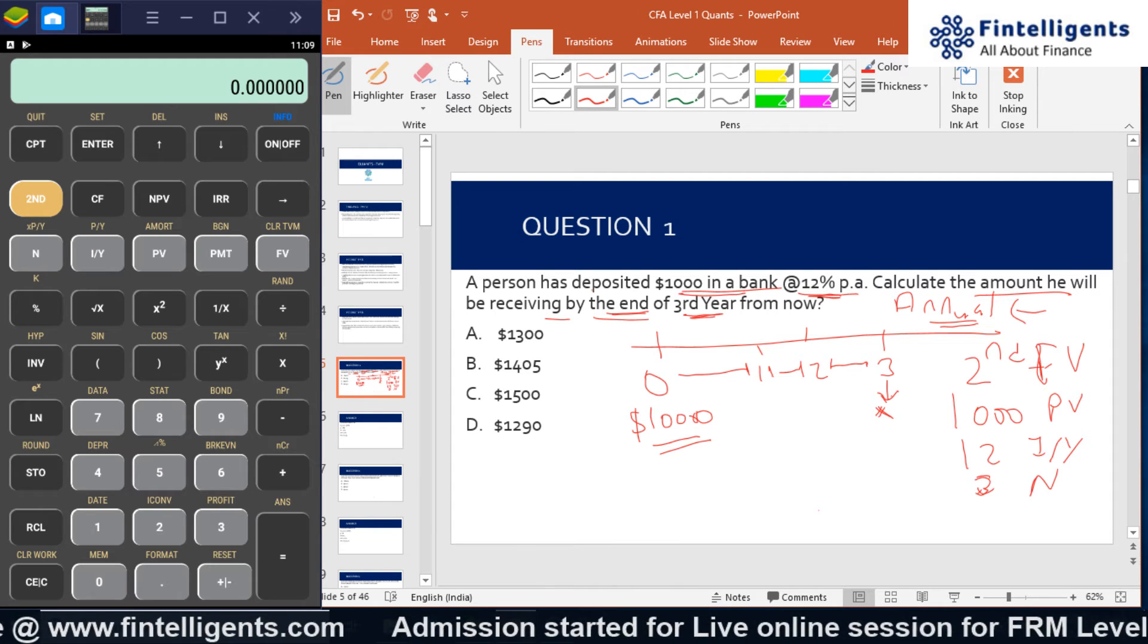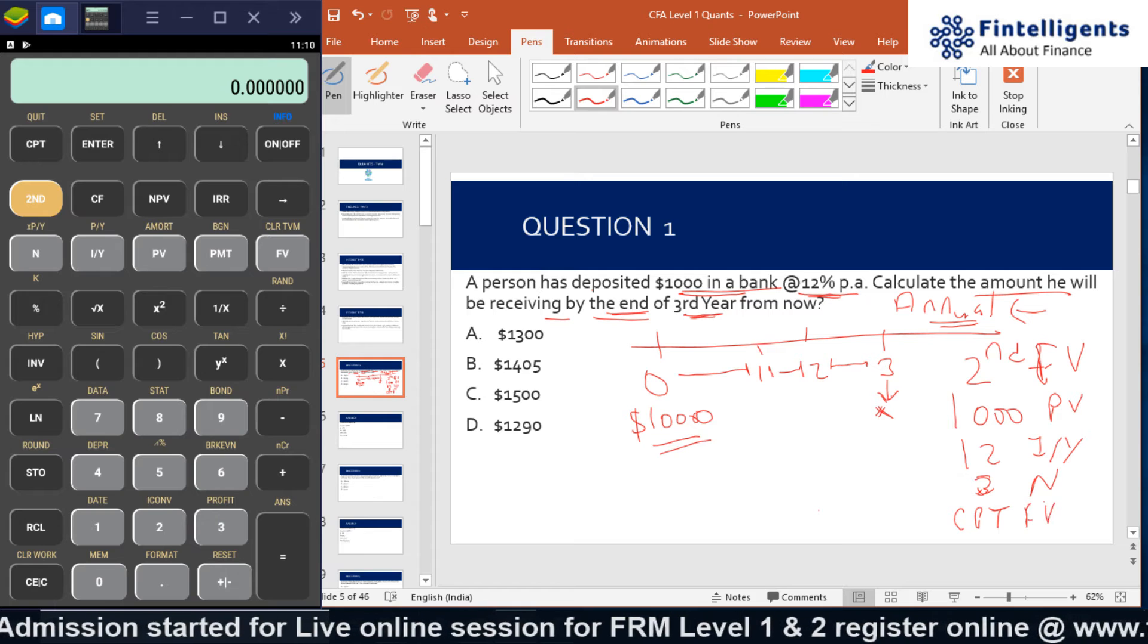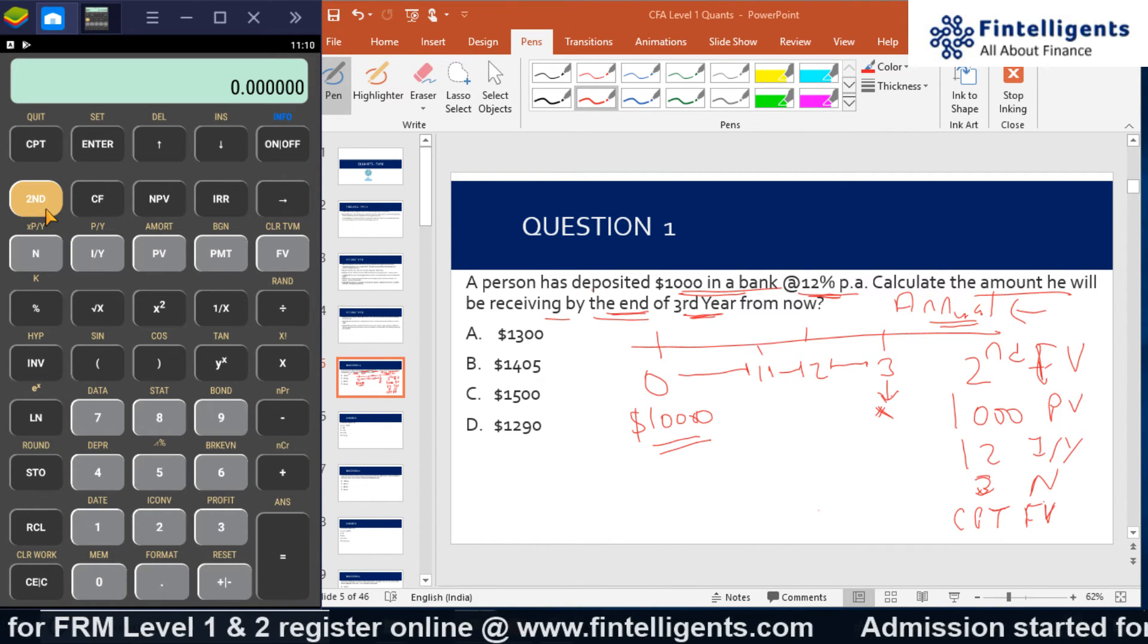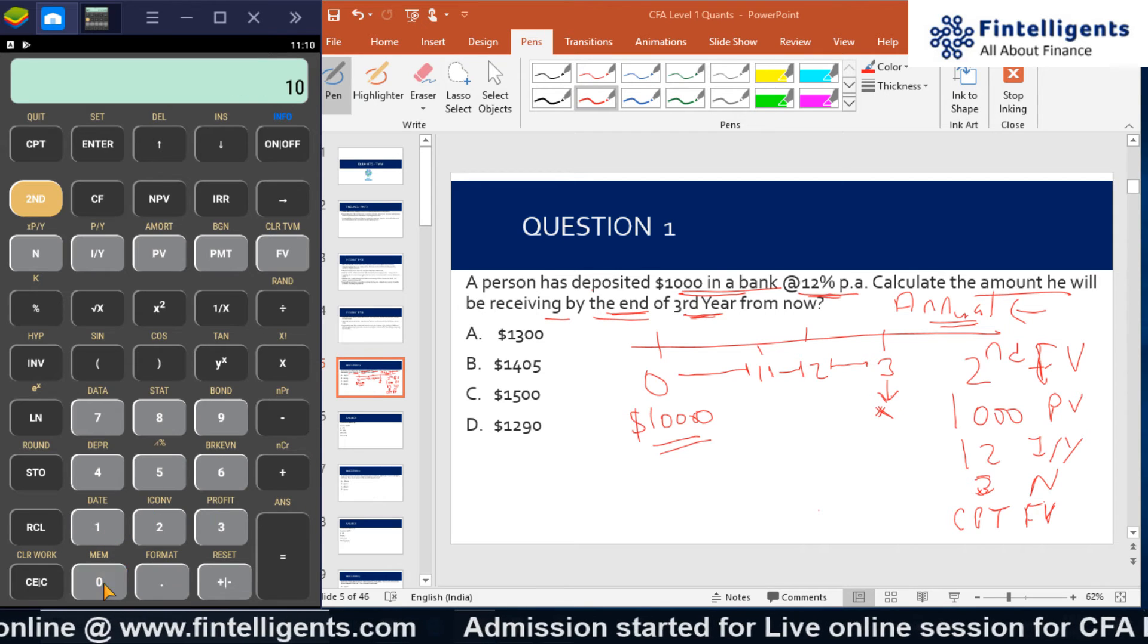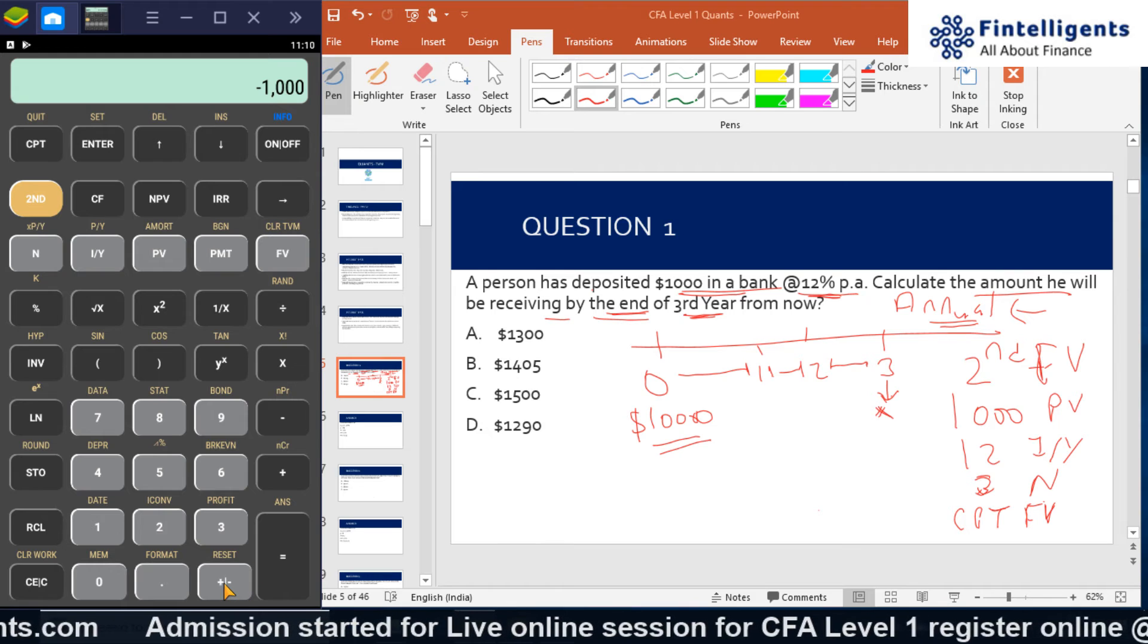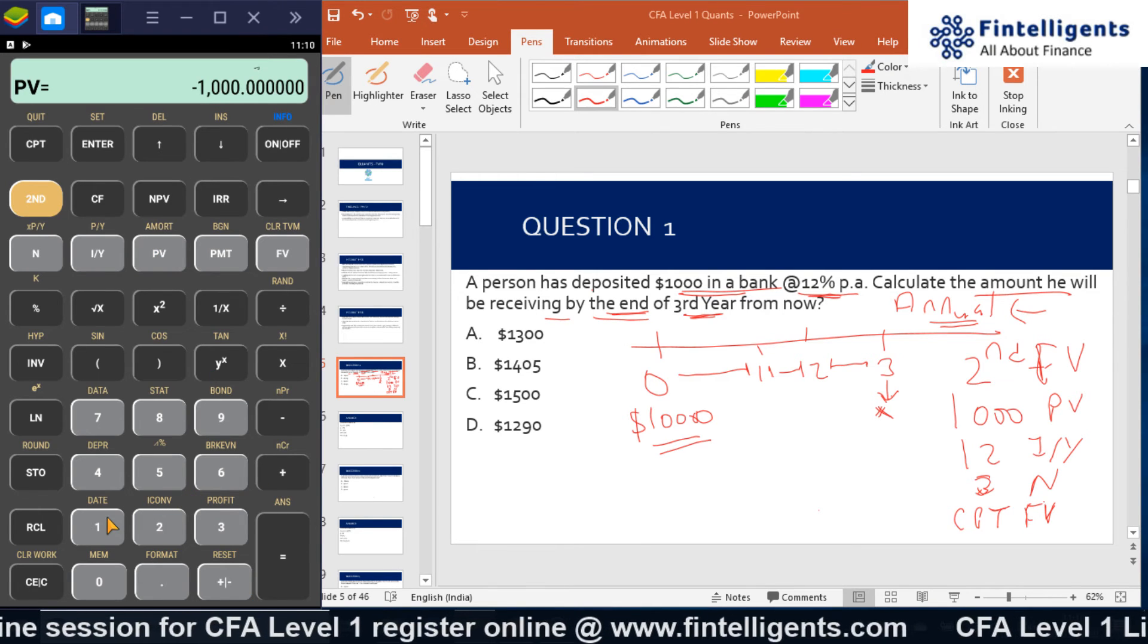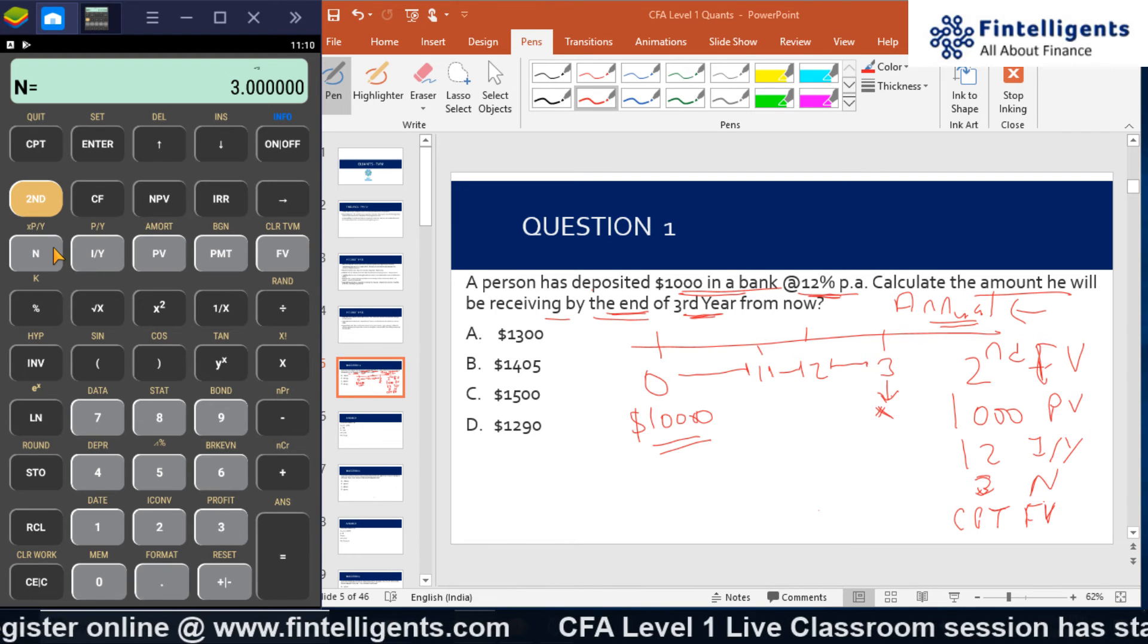How do I do it on the calculator? I will first clear the calculator and do second FV. That is the first step. Then I'll input -1000. Since I am depositing this $1000, I will input negative in the present value. Then I will be inputting 12 as an interest rate into I/Y and 3 as N, the number of years, and I will compute for FV.